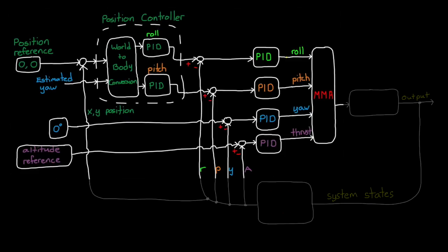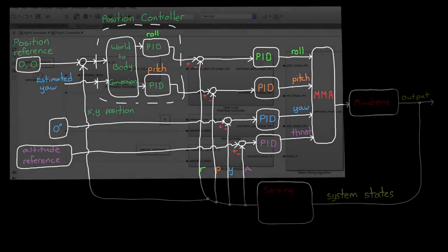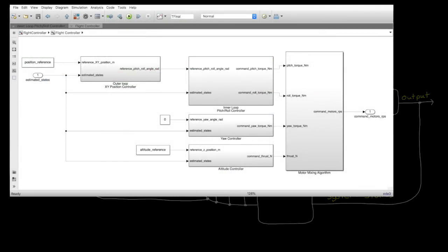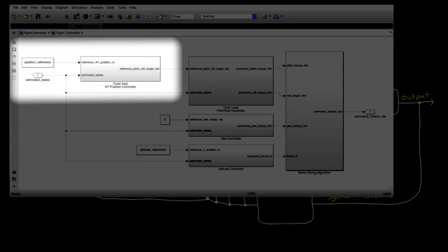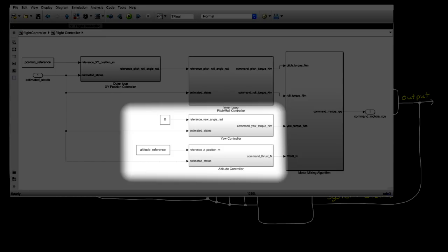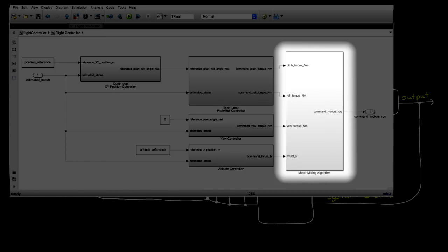In fact, if we just look at the controller portion of this feedback system, you can see that the Simulink model has pretty much the exact same controller architecture that we've built in this video. The outer loop xy position controller is generating the reference, pitch, and roll angles for the inner loop controller. There's also the yaw and altitude controllers, and each of them feed into the motor mixing algorithm.